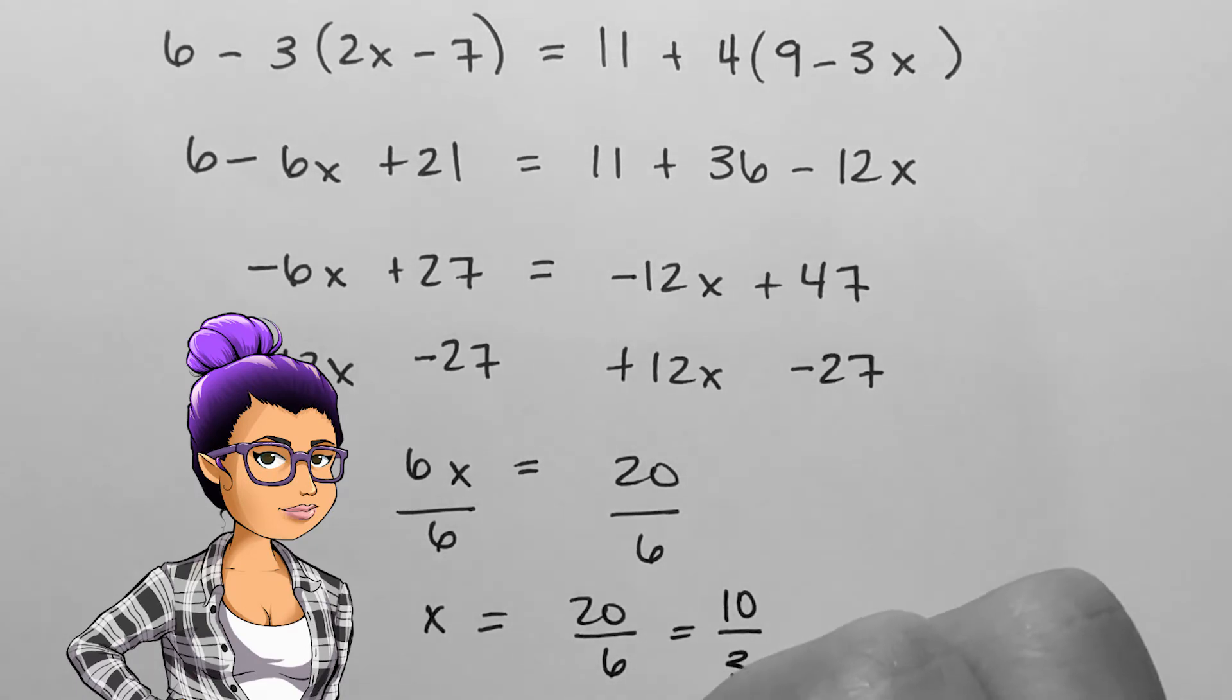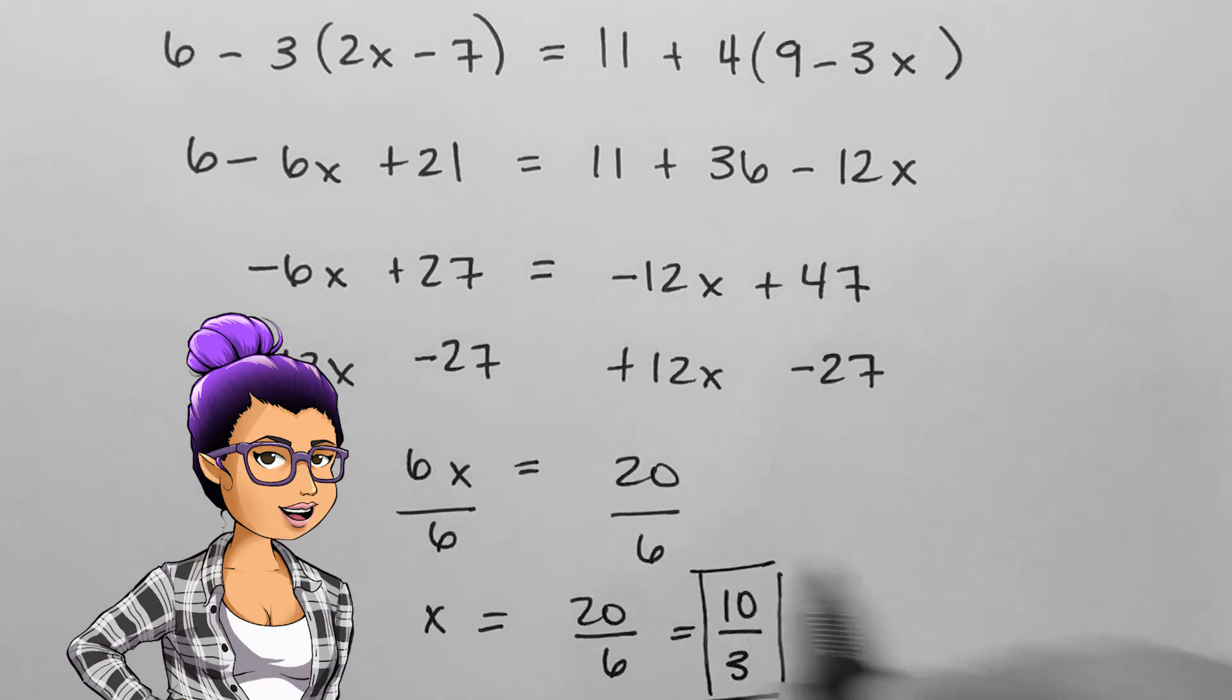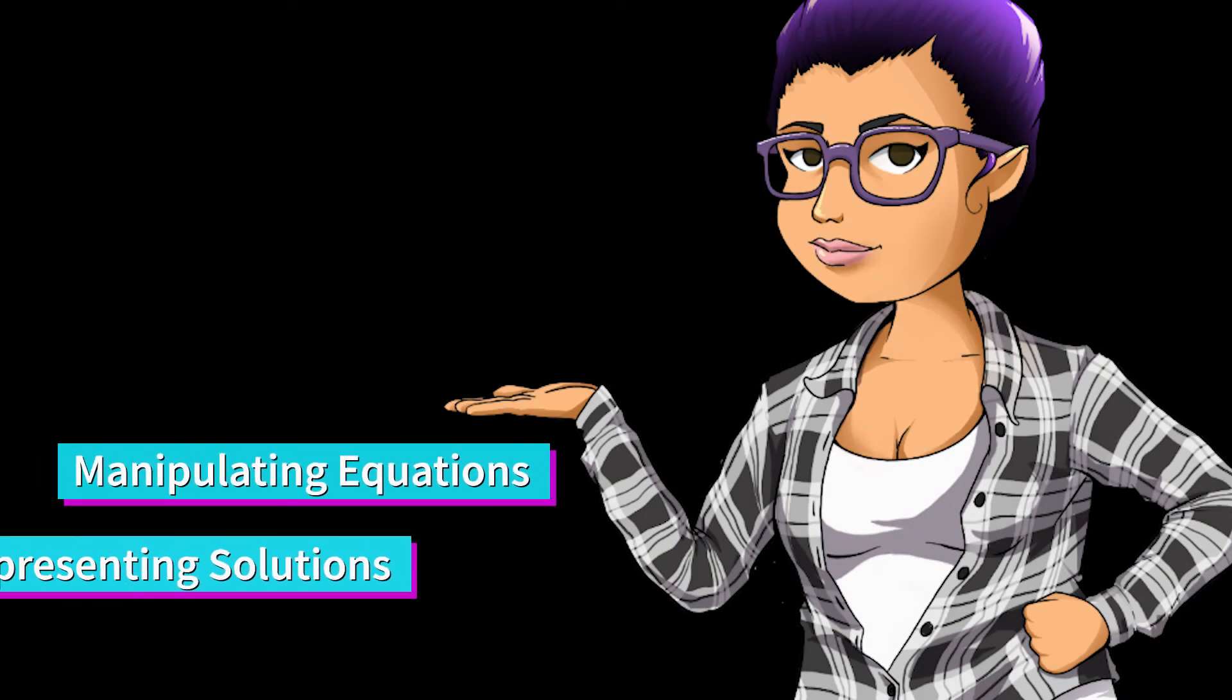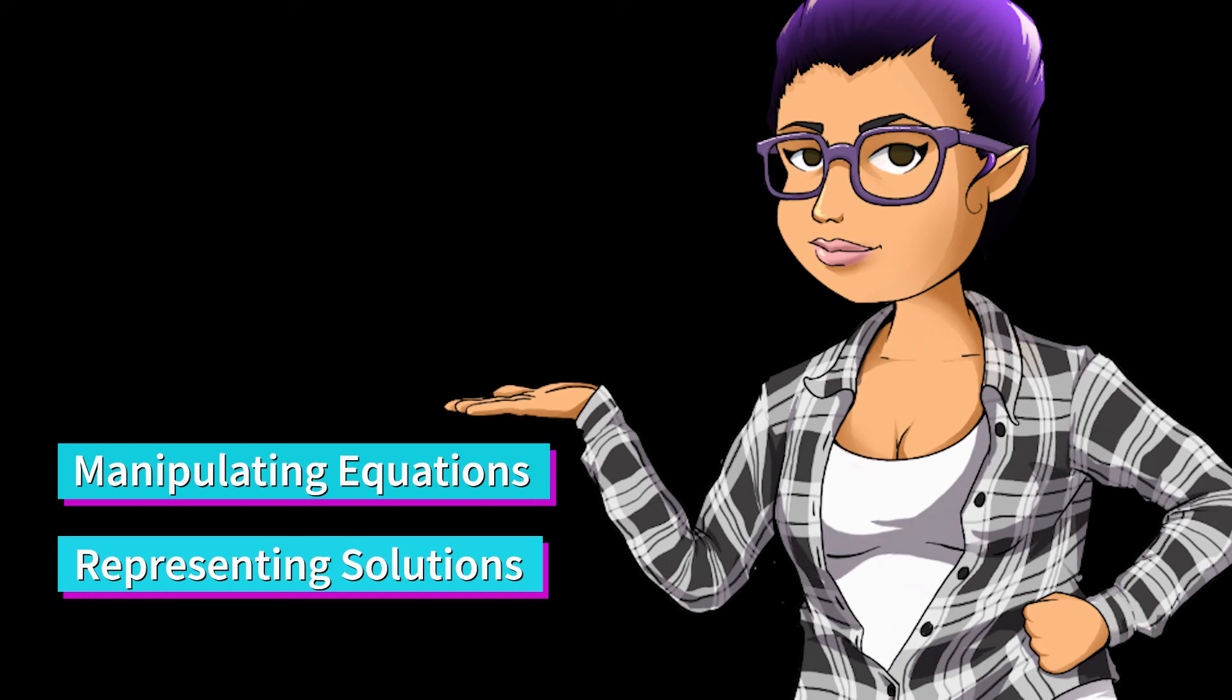If x equals 20 over 6, then x is equivalently equal to 10 over 3, since both 20 and 6 are divisible by 2. When possible, I should simplify my answers completely, leaving them as an improper fraction.